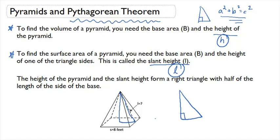This right triangle is going to be really helpful to us because it's going to give us a relationship between the height of the pyramid and the slant height of the pyramid.